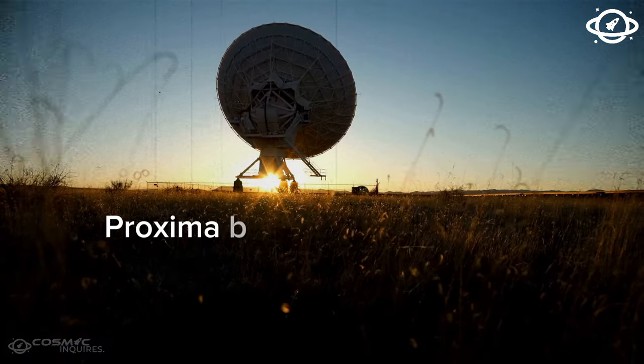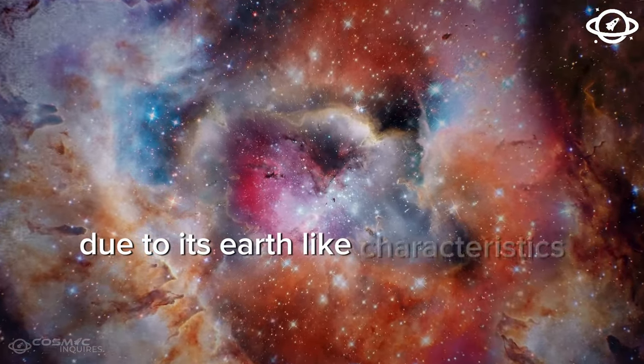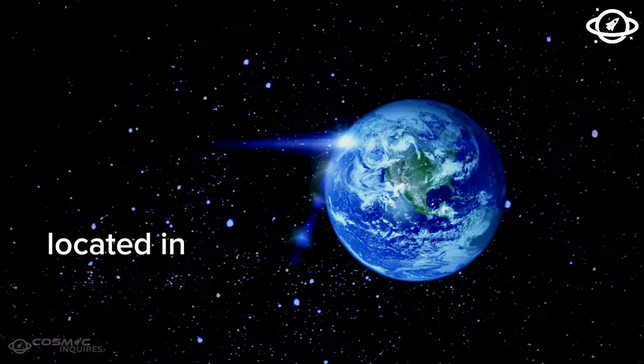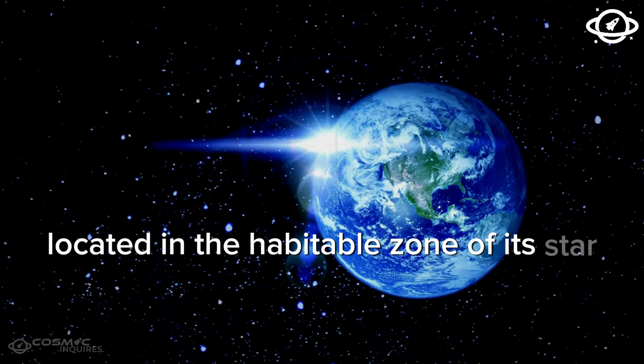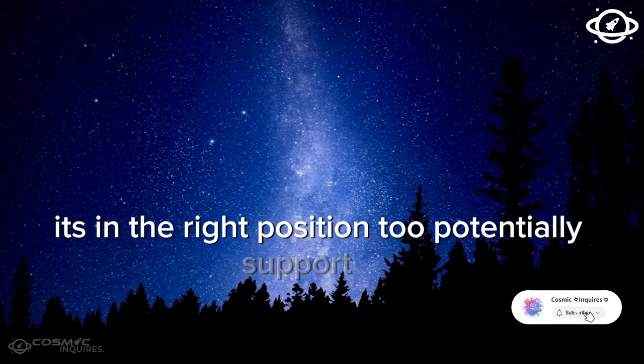Proxima b has long fascinated astronomers due to its Earth-like characteristics. Located in the habitable zone of its star, Proxima Centauri, it's in the right position to potentially support life.